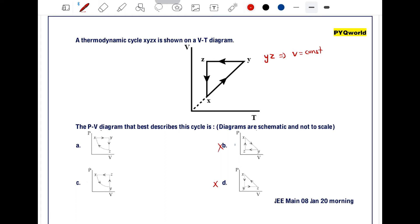Next, for the process z-x, temperature is constant. Temperature constant means it is an isothermal process in which pressure into volume is equal to constant. So pressure is inversely proportional to V. So it is an exponential graph like this. This is the correct one for x-z process.